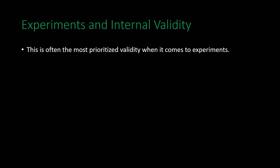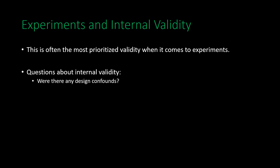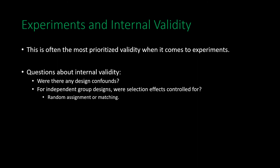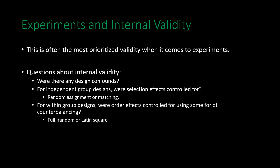Finally, experiments and internal validity — this is often the most prioritized validity in experimental contexts. Key questions concern design confounds: were there any confounds that could alternatively explain the differences found? For independent groups designs, were selection effects controlled for and how were participants assigned to different levels? For within groups designs, were order effects controlled for in some form — whether through full counterbalancing, random counterbalancing, or some type of Latin square?